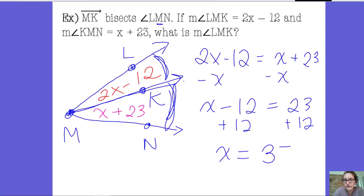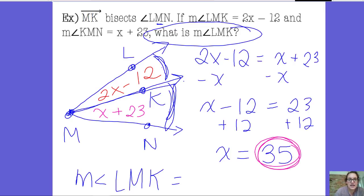And you get X is 35, but that's not what it's asking for. It says what's the measure of angle LMK, which means I'm going to need to take the 35 and plug it back in for X. So LMK is right here, so I'm going to plug the 35 in for X. 2 times 35 is 70, and 70 minus 12 is 58.